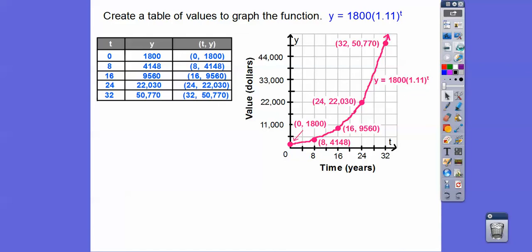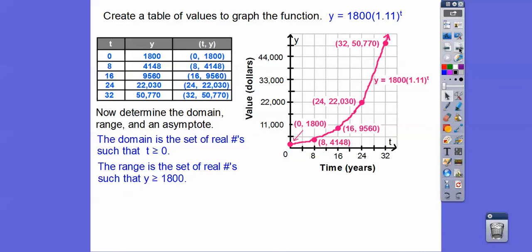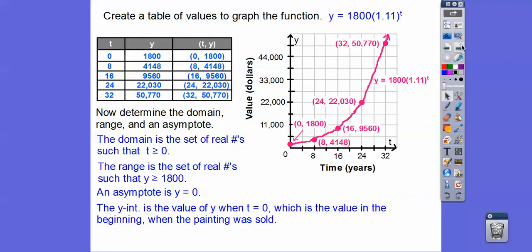And then it said to ask us to do something else. Now determine the domain and the range. So the domain is how much it goes to the right. It doesn't go to the left forever. So it's X is greater than or equal to zero. And the range is, the range is how far it goes up and down. It goes down to 1,800. So the range is 1,800 and bigger. So something like that. Oh, your domain is a T. Sorry for time. And the asymptote is this line right here. Y equals zero or T equals zero. No, it would be Y equals zero. So the Y intercept is the value when T equals zero, which is the value of the painting, which was 1,800 bucks, which when they first bought it.